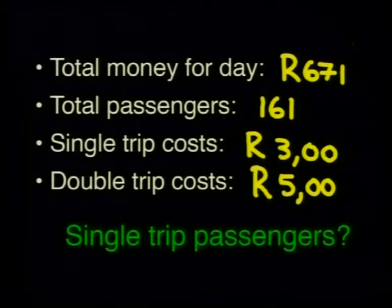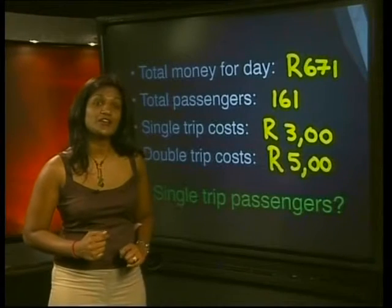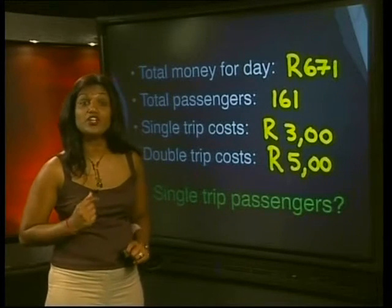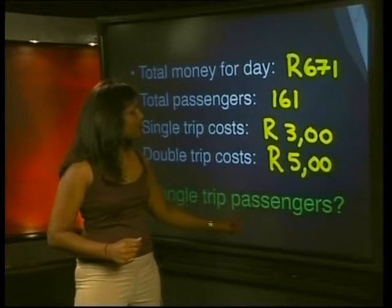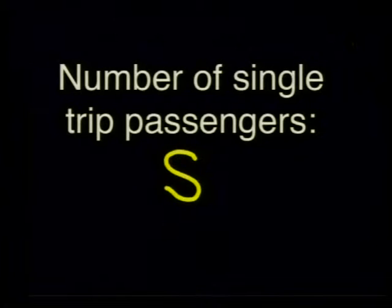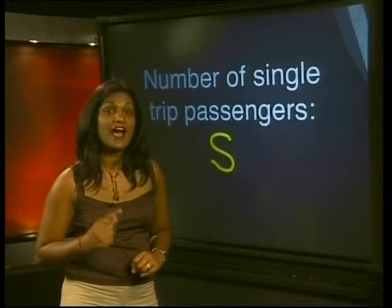We must find the number of passengers who paid for a single trip. What are the unknown values? Remember we're looking for the number of single trip passengers. So let's assign a letter symbol to this. We'll call the number of single trip passengers S. What is the other unknown number? We don't know the number of passengers that pay for a double trip. So let's call this D.